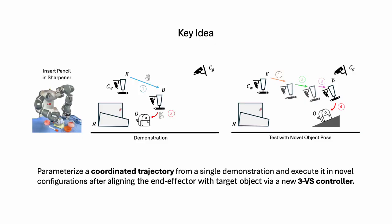For this to work, we first parameterize a coordinated trajectory from a single demonstration. Then, we execute it in novel configurations after aligning the robot's end effector with a target object. This is achieved using our new 3-stage visual surveying controller.